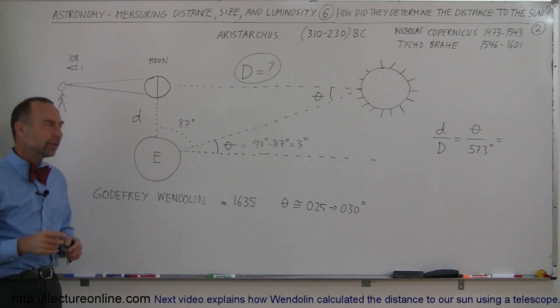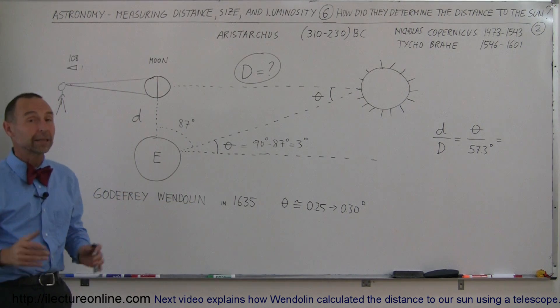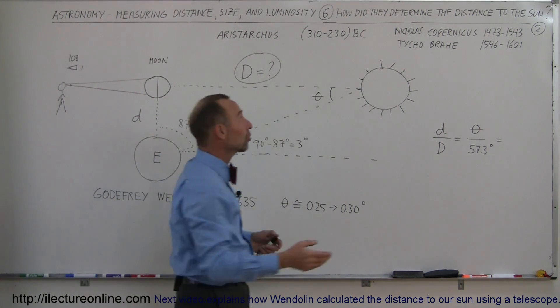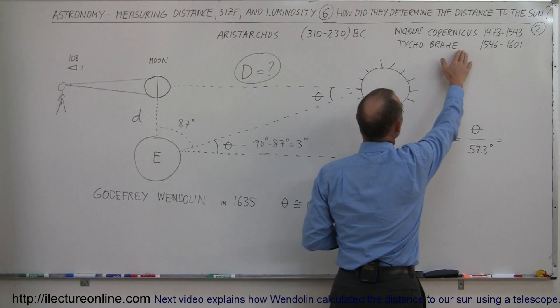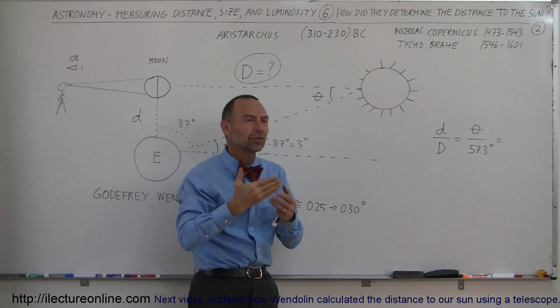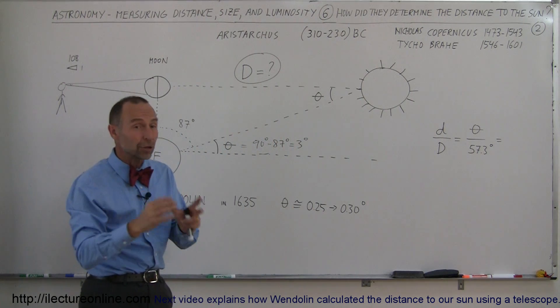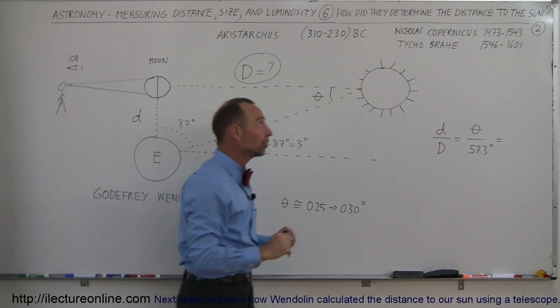So not until almost 2,000 years later, in 1635, they improved upon that method. It turned out that two very famous astronomers, Nicholas Copernicus, who determined from his logic that the sun was at the center of the universe rather than the Earth. It was not a very popular idea in those days.